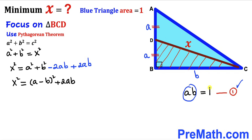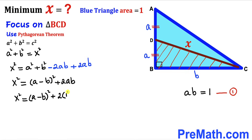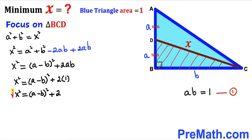From equation 1 we know ab equals 1, so we replace ab with 1. Therefore x squared equals (a minus b) squared plus 2 times 1, which simplifies to x squared equals (a minus b) squared plus 2. Taking the square root of both sides, x equals the square root of (a minus b) squared plus 2.